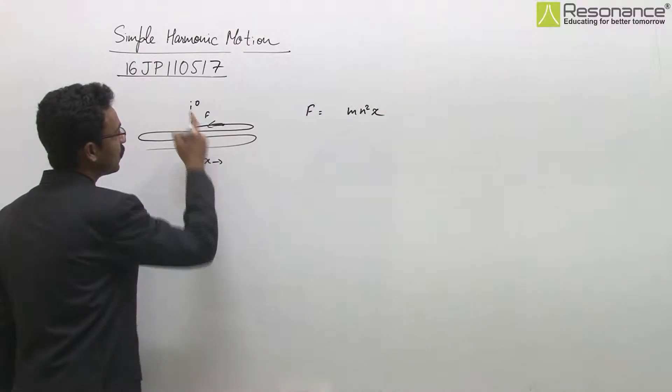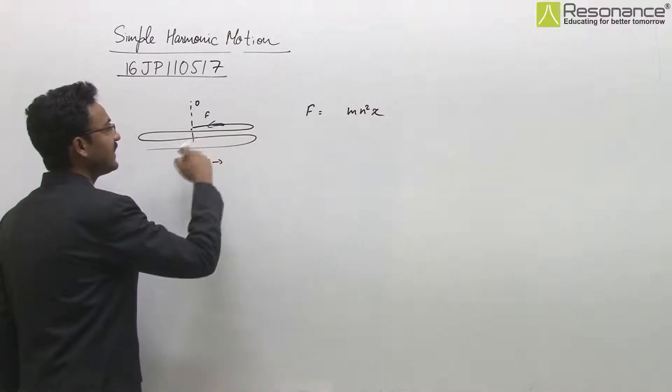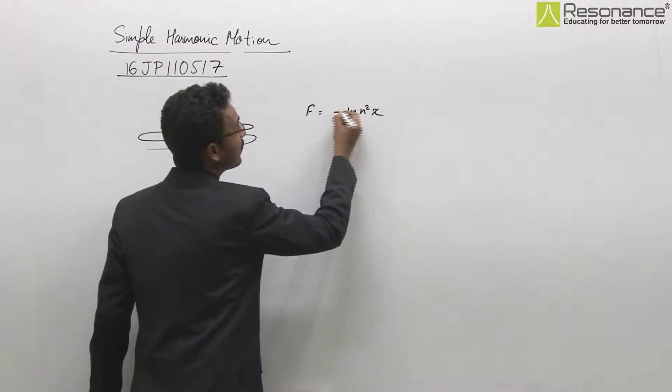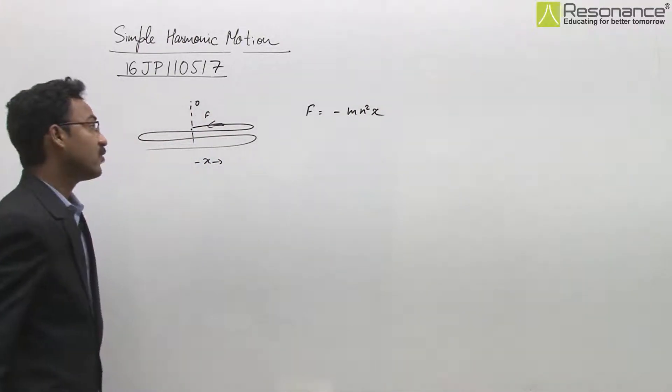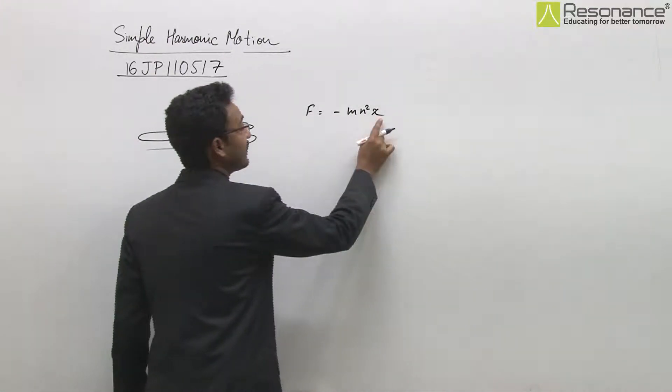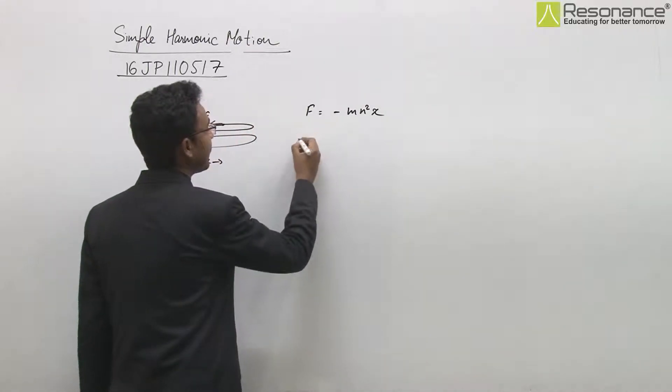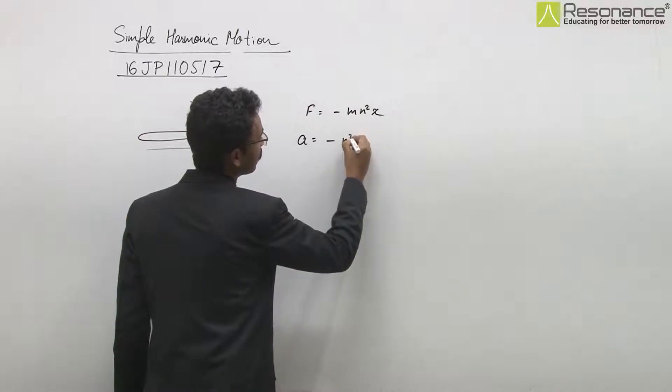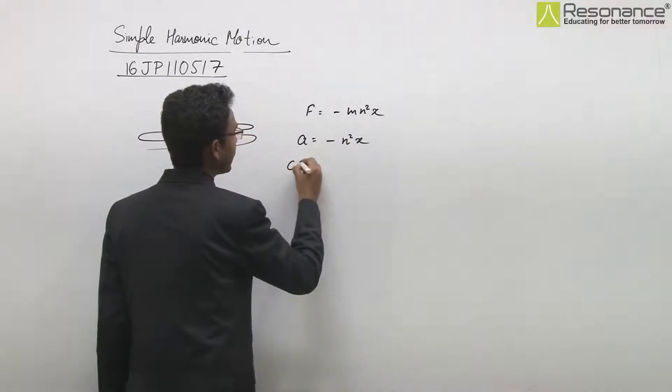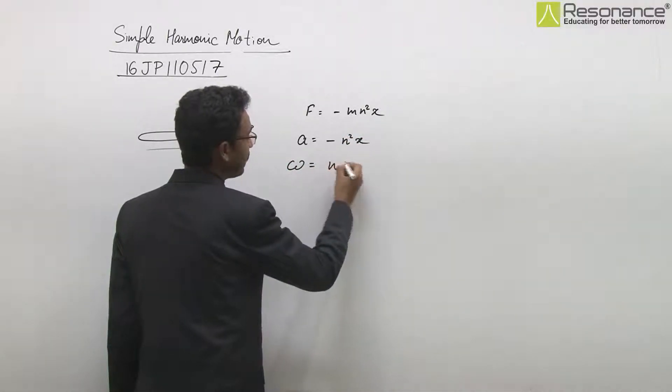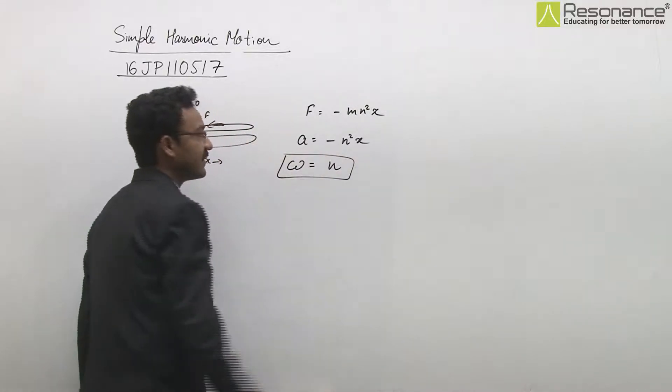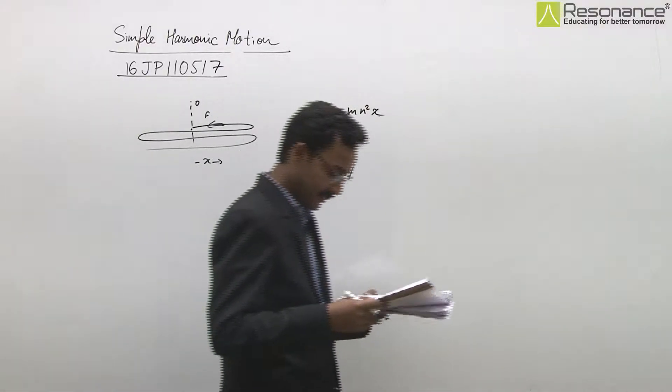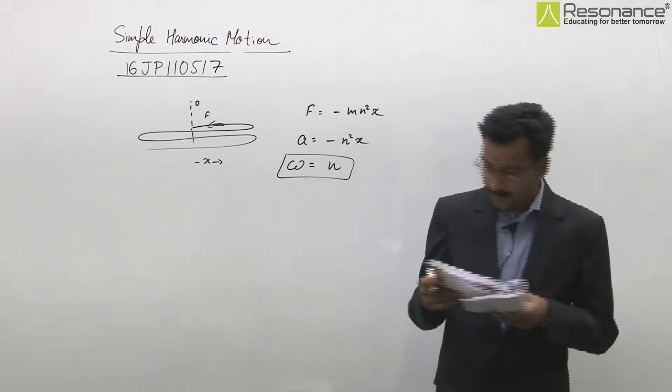then looking at the direction of force, we put a minus sign. The force satisfies the conditions for SHM and acceleration is -n²x. From this, omega equals n, meaning the angular frequency of SHM equals n in this case.